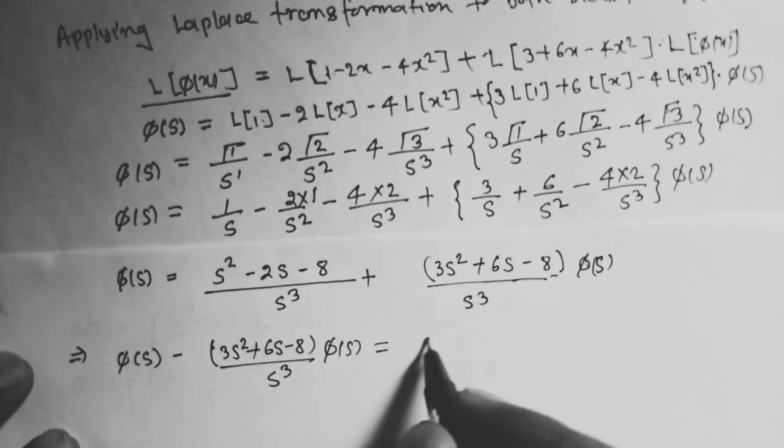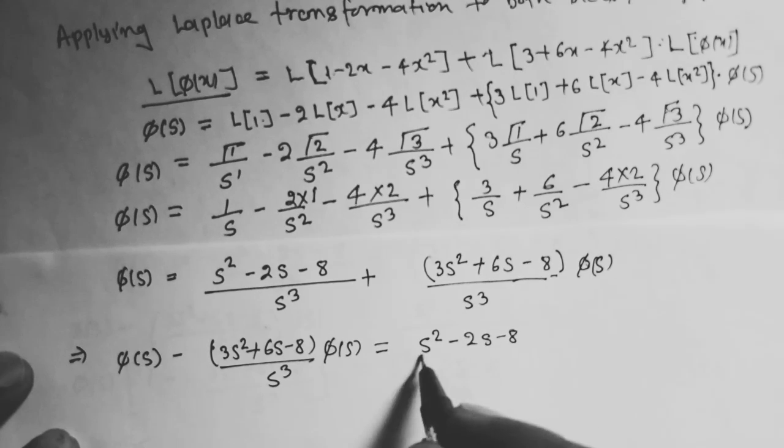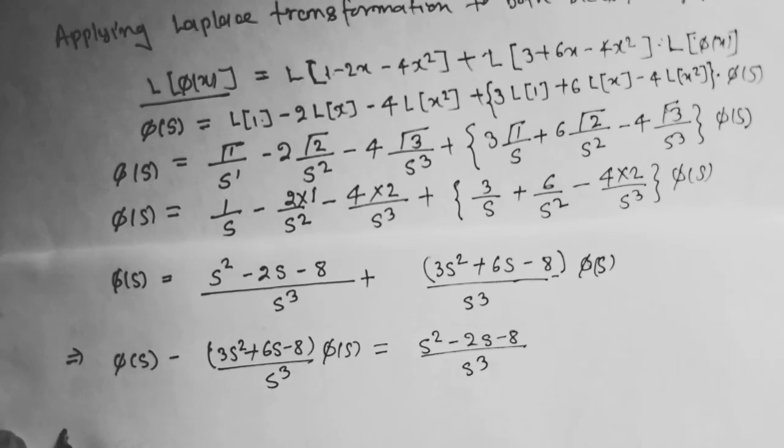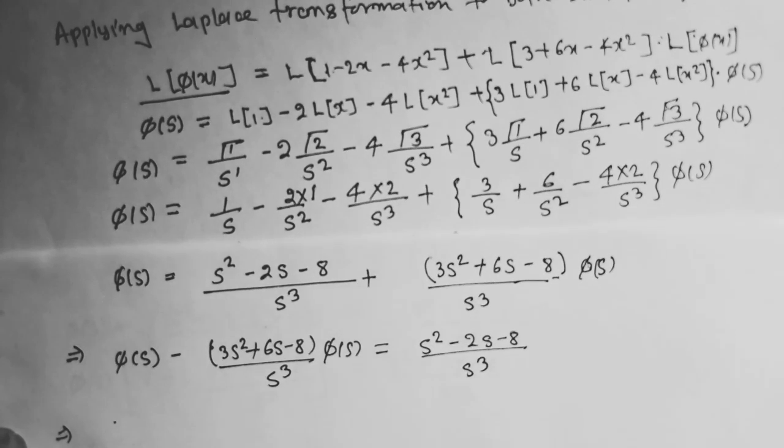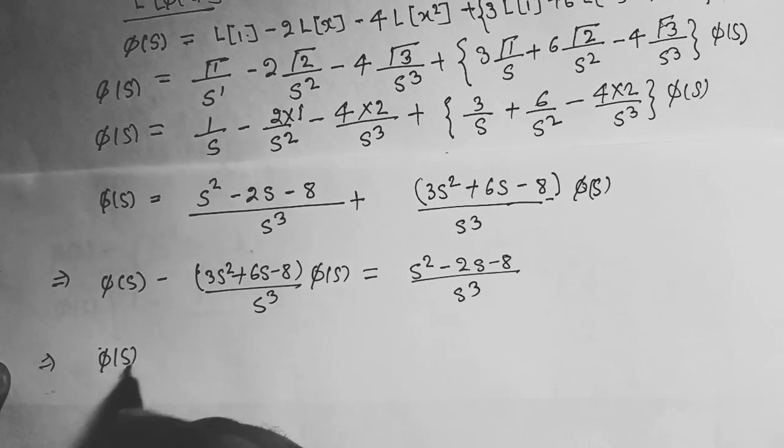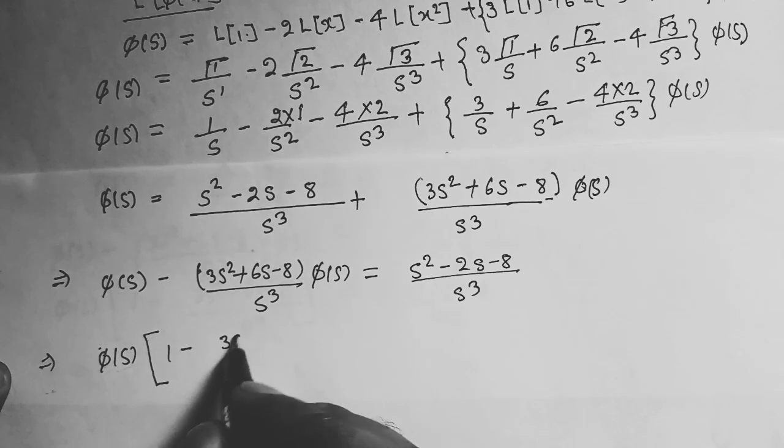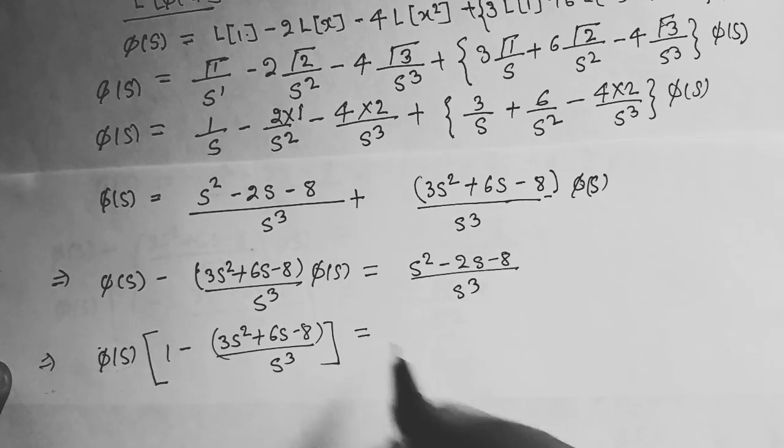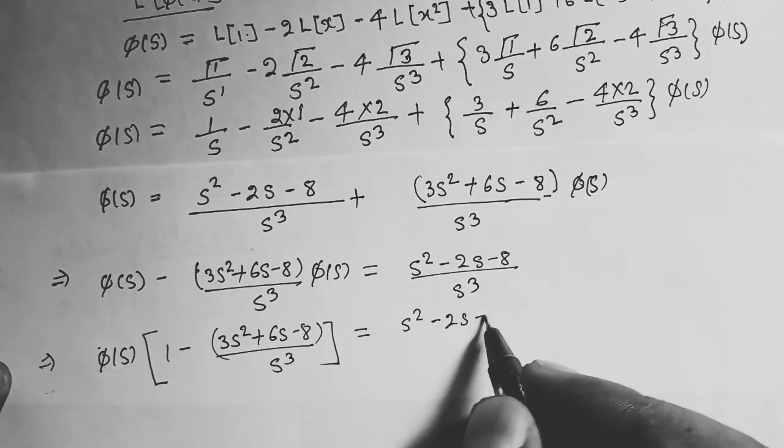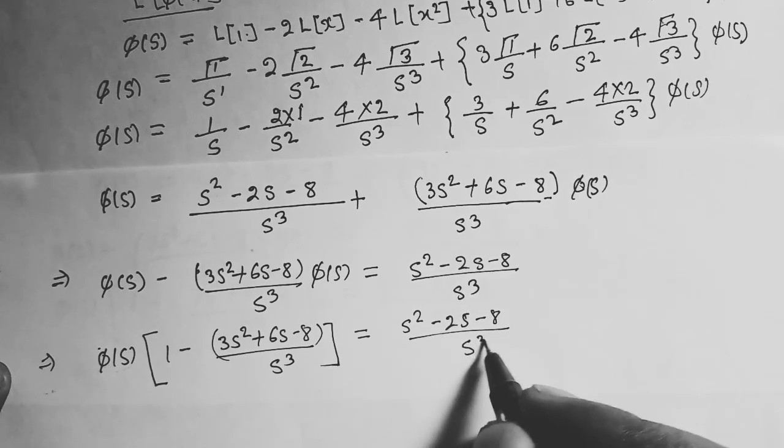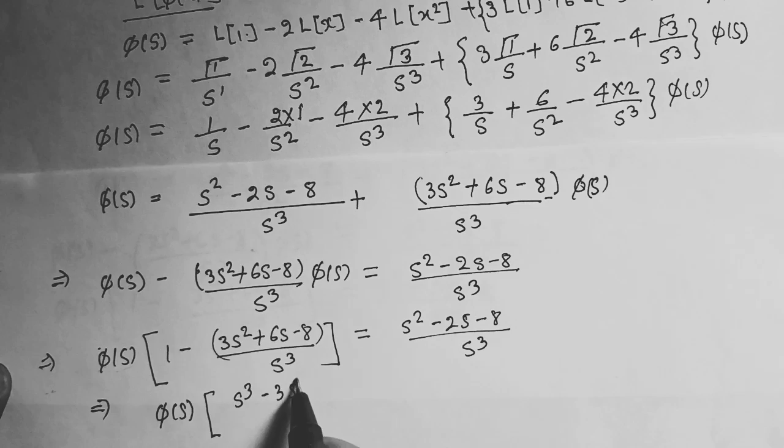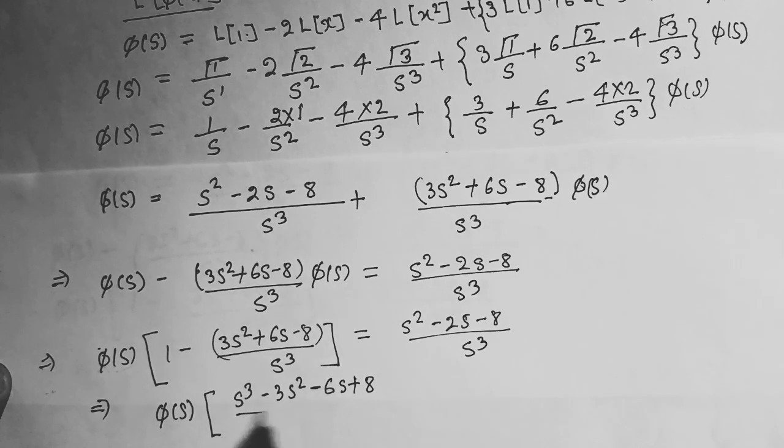φ(s) = (s² - 2s - 8)/s³ × s³/(s³ - 3s² - 6s + 8). This simplifies to φ(s) = (s² - 2s - 8)/(s³ - 3s² - 6s + 8).